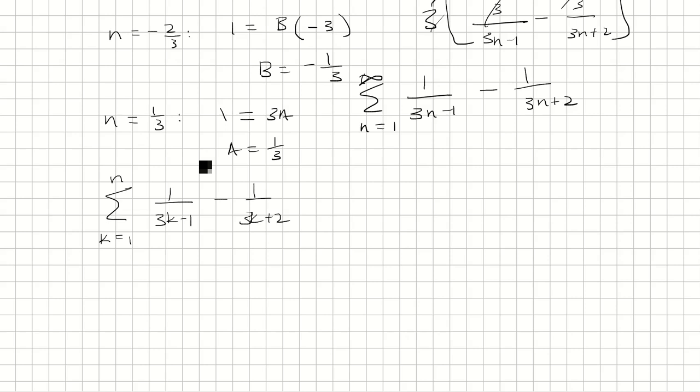So basically, when we plug in k equals 1, we have 1 over 2, and then when we plug in k equals 1 here, we have minus 1 over 5. Plug in k equals 2, we have 1 over 5 minus 1 over 8.